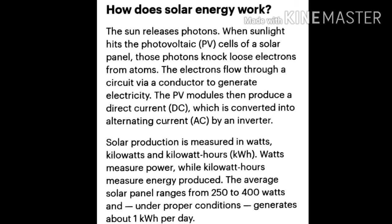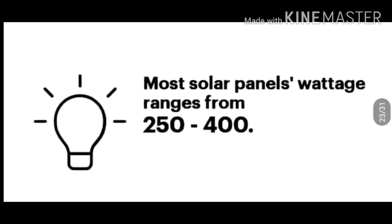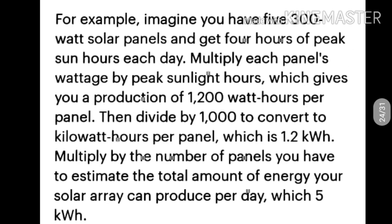Solar production is measured in watts, kilowatts, and kilowatt-hours. Watts measures power while kilowatt-hours measure energy produced. Average solar panel ranges from 250 to 400 watts and under proper conditions generates about 1 kilowatt-hour per day. For example, imagine if you have five 300-watt solar panels and get four hours of peak sun hours each day. You multiply each panel's wattage by peak sunlight hours, which gives you a production of 1,200 watt-hours per panel. Then divide by 1,000 to convert to kilowatt-hours per panel, which is 1.2 kilowatt-hours. Multiply by the number of panels to estimate the total amount of energy your solar array can produce per day, which is 6 kilowatt-hours.